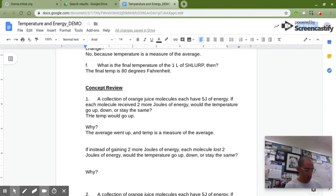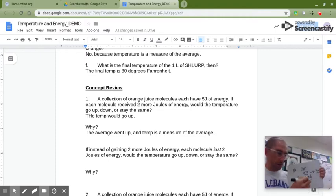If instead of gaining two more joules of kinetic energy, each molecule lost two joules, would the temperature go up, down, or stay the same? So we're starting back with five, average is five, and they lost two, so it goes down to three. Average is now three joules. Average goes down, then the temp goes down.